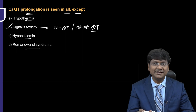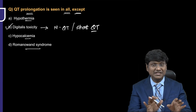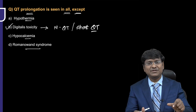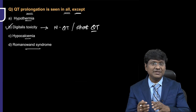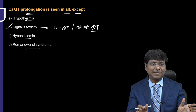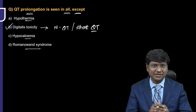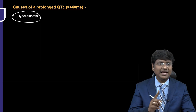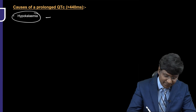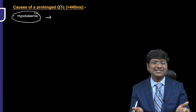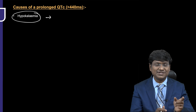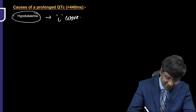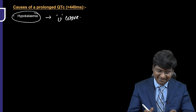In hypothermia, hypocalcemia, and Romano-Ward syndrome, you will have QT prolongation. Now let me discuss the individual etiologies causing QT prolongation and what other ECG changes occur apart from QT prolongation. For example, in hypocalcemia, you will have QT prolongation, but what are the other ECG changes? The first is the appearance of the U wave.